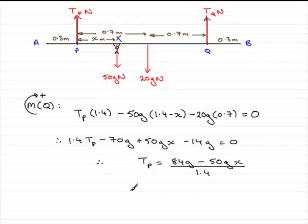And that means that therefore the tension in the rope at P equals, so you do 84G divided by 1.4. If you do that on your calculator, you'll find you get 588. And if you do 50GX, G being 9.8, do that on your calculator, divide by 1.4, you'll get minus 350X. So it's that force in newtons.